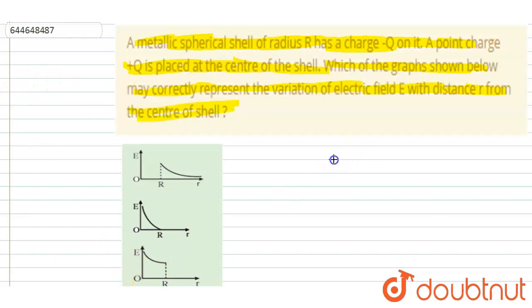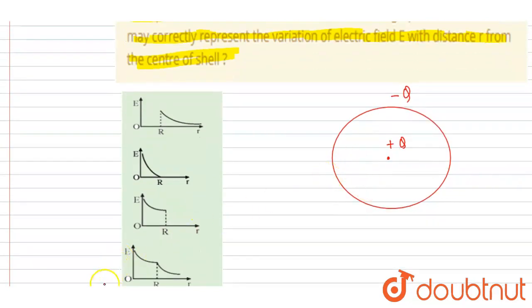So if I draw a shell and I am saying that on this shell the charge is minus Q. And at the center it is plus Q. So if you see at a distance of r, if the r is less than the radius. If you see this is the radius R and if the r is small r is less than this radius.